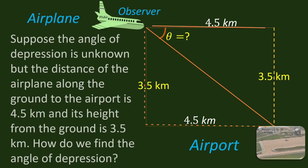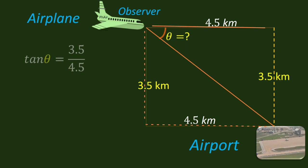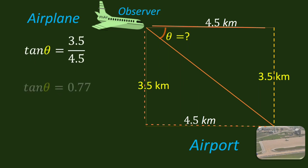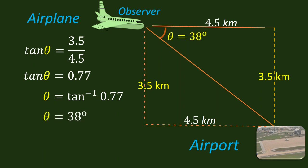Suppose the angle of depression is unknown, but the distance of the airplane along the ground to the airport is 4.5 kilometers and its height from the ground is 3.5 kilometers. How do we find the angle of depression? All the given information are already in the figure, so what we need now is the angle of depression theta. Tangent theta is equal to 3.5 over 4.5. Dividing these numbers, we have 0.77. Theta is equal to tangent raised to negative 1 of 0.77. Using the calculator, the value for theta is equal to 38 degrees.